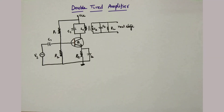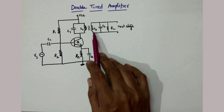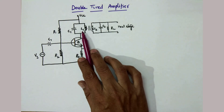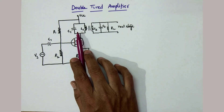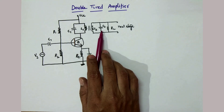Hello students, welcome to the concept of double tuned amplifier. In the last video I explained the single tuned capacitive coupled amplifier, and before that I explained the small signal tuned amplifier. In single tuned amplifiers there exists only one tuned circuit, but here if you see the circuit it consists of two tuned circuits: the first tuned circuit is L1C1 and the second tuned circuit is L2C2.